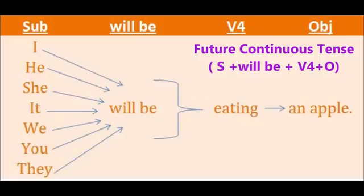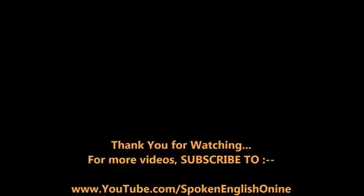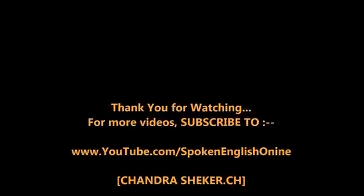The next and last tense in our session is future perfect continuous tense. The structure is subject plus will have been plus V4 plus object. You can also write shall have been here. Examples: they will have been eating an apple, he will have been eating an apple. So friends, by seeing these tenses you should write your own examples and apply them — you will become a master in tenses, as tenses are really like the backbone of the English language. Thank you very much for watching this video. For more videos please subscribe to the channel youtube.com/spokenenglishonline. Thank you very much.